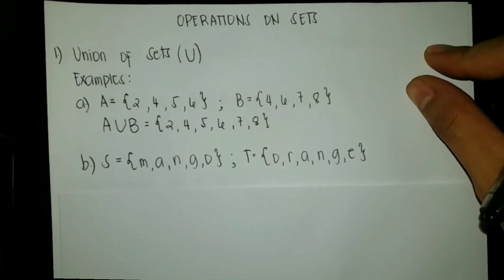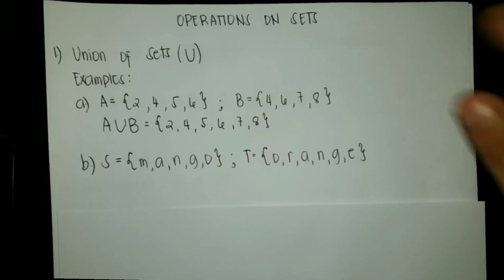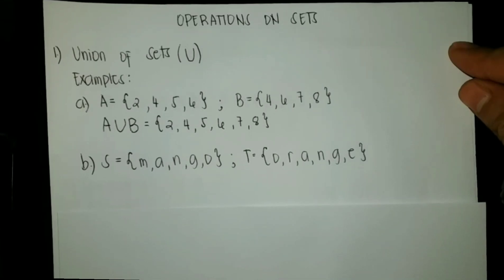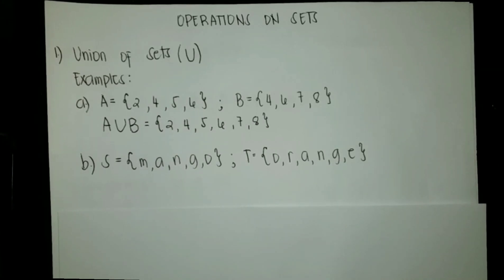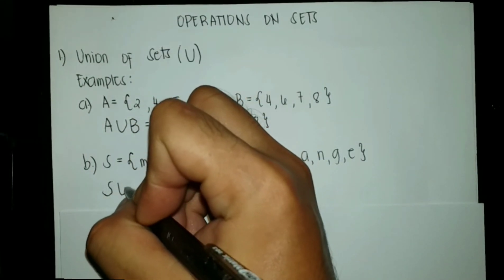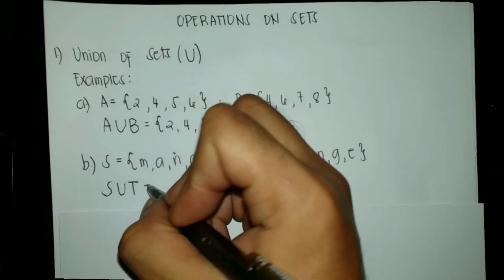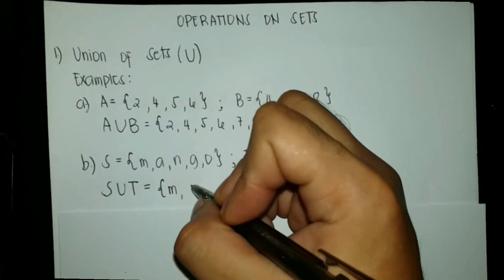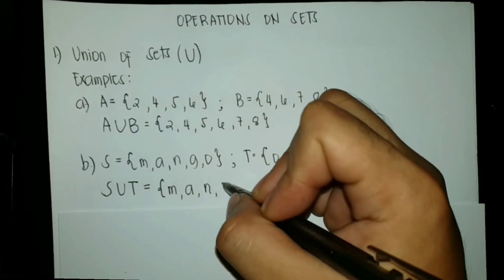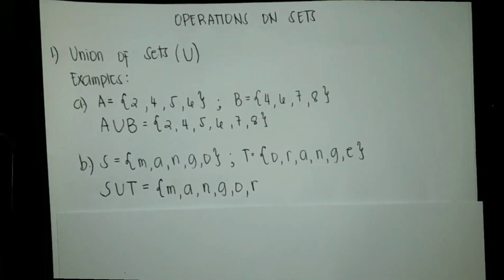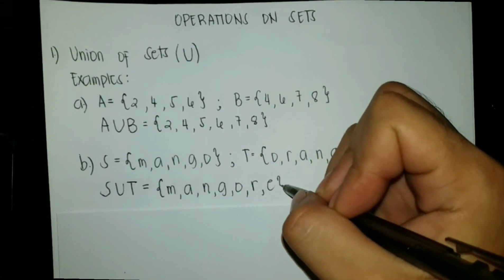Another example. We have sets S and T. Set S has the elements M, A, N, G, O. Set T has the elements O, R, A, N, G, E. Getting the union of S and T: S union T is equal to the set with the elements M, A, N, G, O, R, E. That is what we call the union of sets.